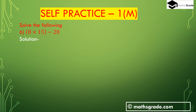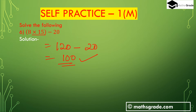Now question number 6: (8 multiplied with 15) is inside the bracket, minus 20. First calculate inside the bracket: 8 multiplied with 15 is 120. Then 120 minus 20 is 100. So 100 is the answer. So (8 multiplied with 15) minus 20 is 100.